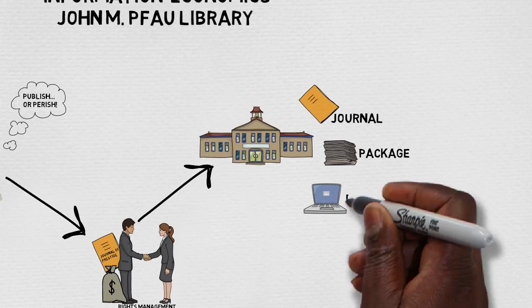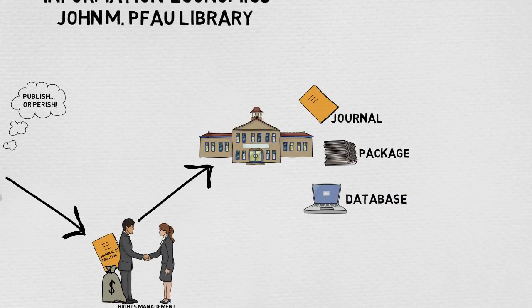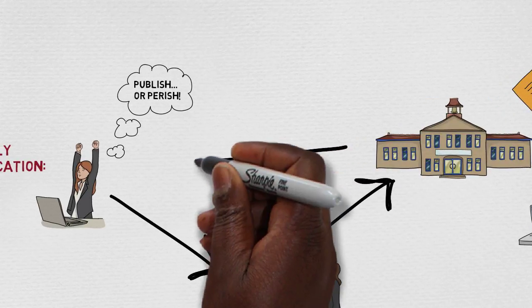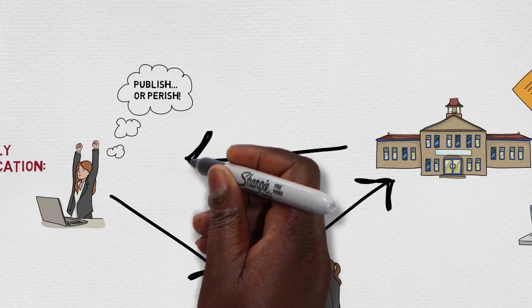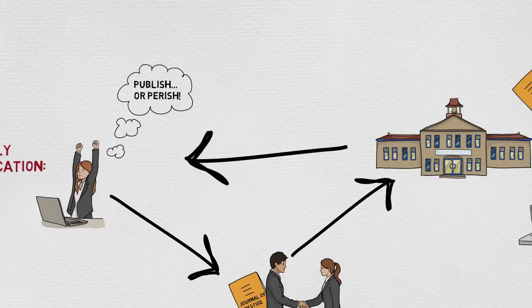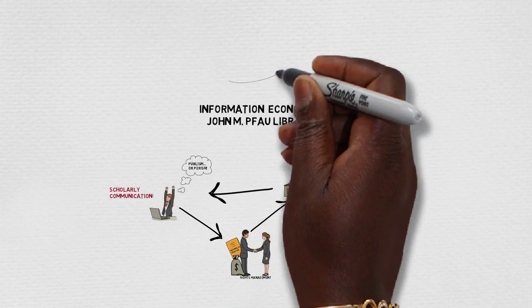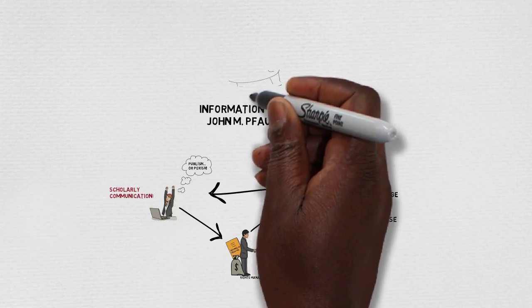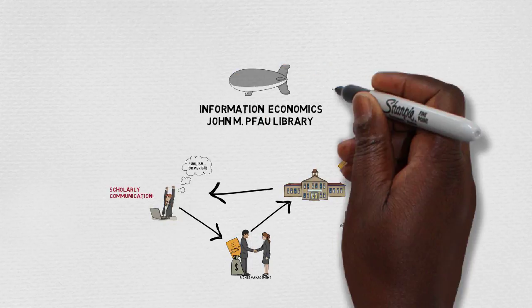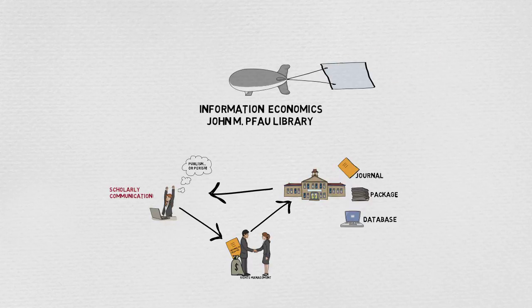If you think about it, the library — a representative of the campus — is in the position of having to purchase research that was created by professors on the same campus. As you might have guessed, there are a lot of people who are fighting against these types of publishing models, and open access publications and institutional repositories play an important role in providing alternatives.